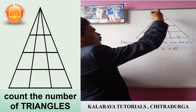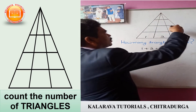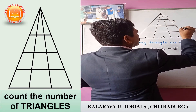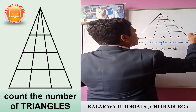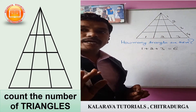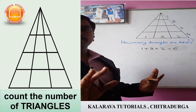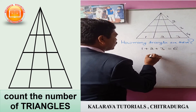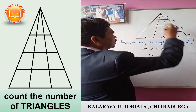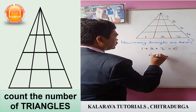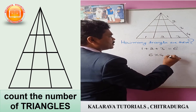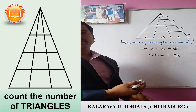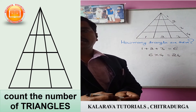Then you have to count the number of parts here: 1, 2, 3, 4 parts. You have to take the number of parts only — there are 4 parts. So you have to multiply this number by the 4 parts: 6 into 4. 6 fours are 24. Therefore, there are 24 triangles in total.